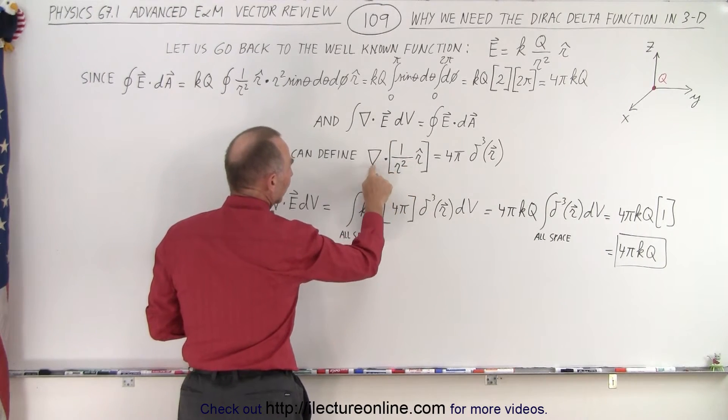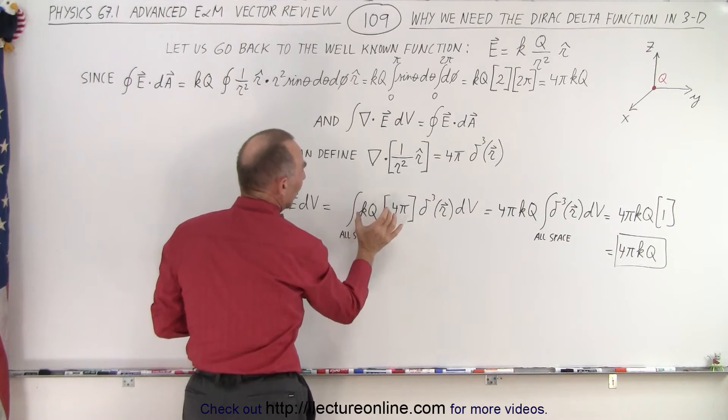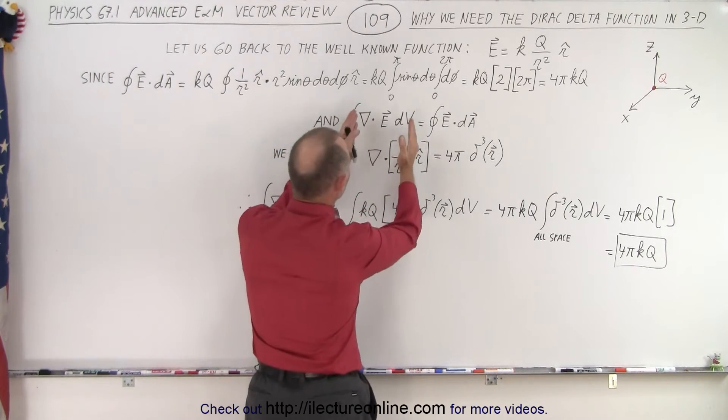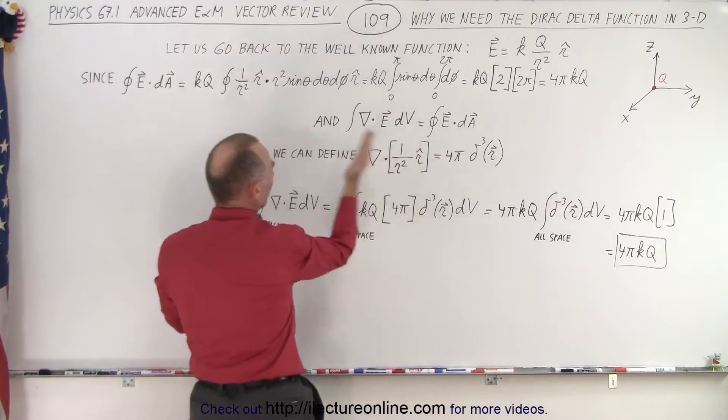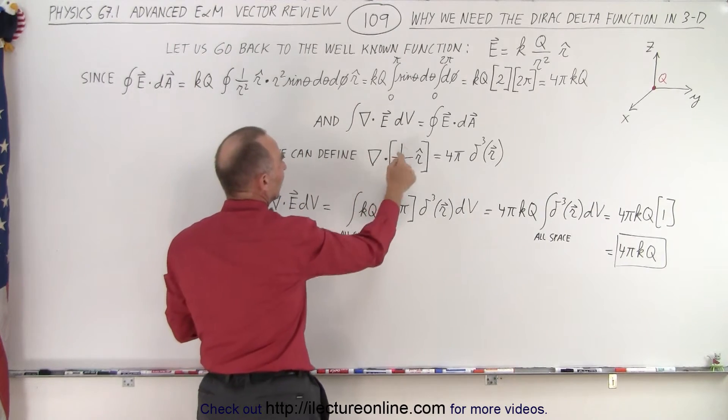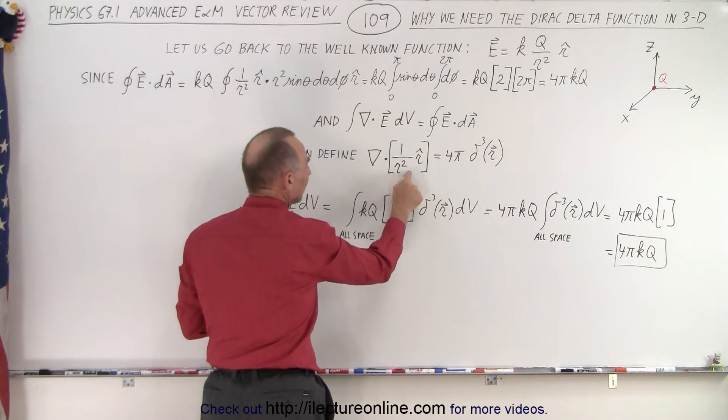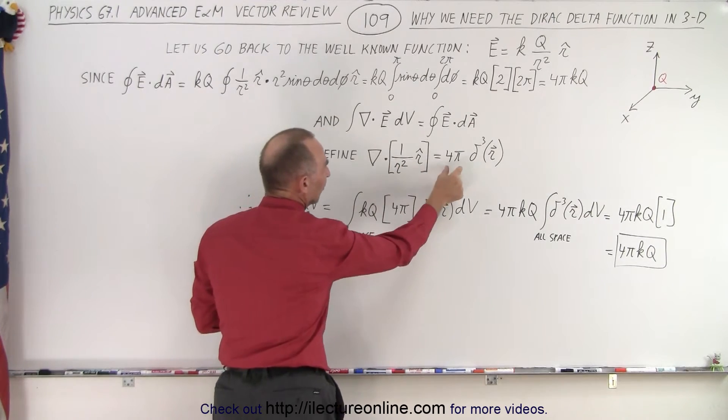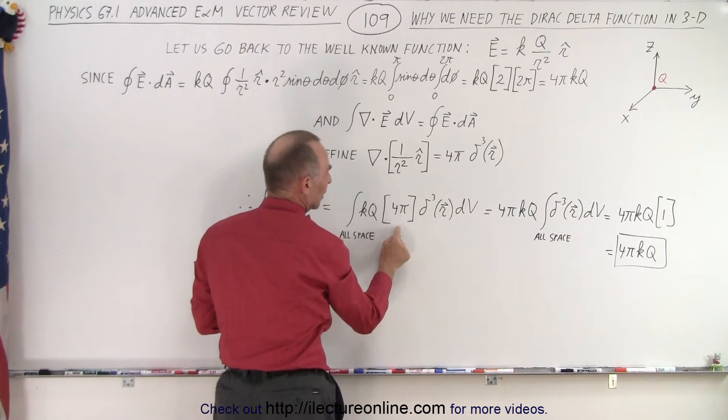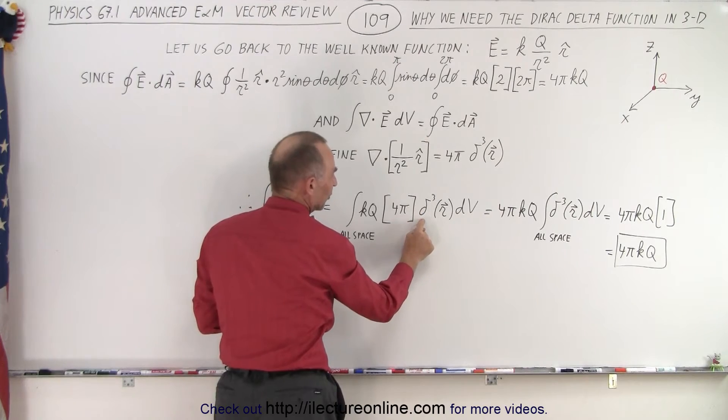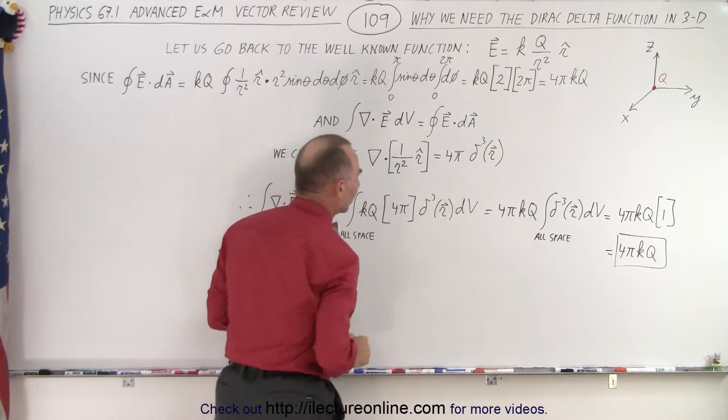Well that was going to be equal to kq, but now instead of writing 1 over r squared in the r direction and taking the gradient of that, we're going to replace that by 4π times the delta function. 4π times the delta function in three dimensions, of course we still need our dV there. Now we can factor out the kq and also factor out 4π, so we have 4πkq. So now you can see that the result we get on the left side over here is exactly the same of what we got on the right side.